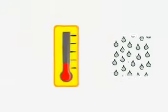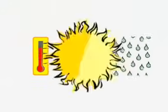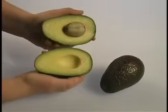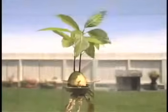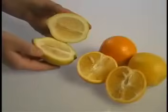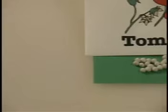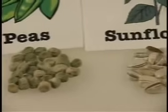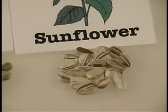When does the tiny plant in the seed start to grow? When it has everything it needs. Seeds need the right amount of water, the right temperature, and enough light and air to start growing. Some seeds can start to grow as soon as they come out of their fruit, like an avocado seed. Seeds from an orange or lemon can start to grow right away too. Other seeds, like these seeds from a tomato, pumpkin, pea, and sunflower, need to dry out before they can start growing.